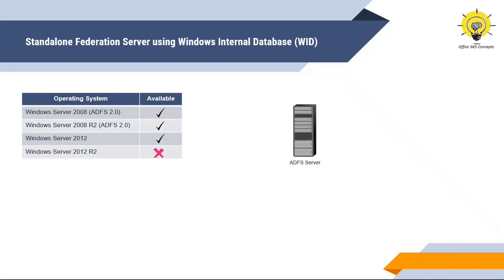You cannot add another ADFS server in your environment if you choose the standalone Federation Server deployment option. Let's say you had a small organization and you installed ADFS using standalone Federation Service option. But now your organization is expanding, so you might need to add another ADFS server. But with standalone Federation Server, this is not possible. And if this ADFS server goes down, you do not have a backup. That is why this deployment was discontinued in Windows Server 2012 R2.